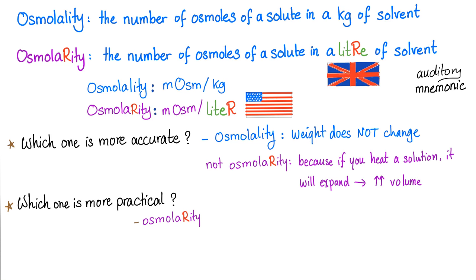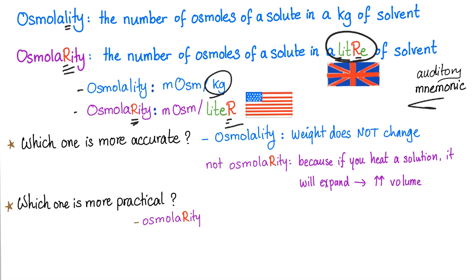The mnemonic goes like this: osmolarity in the liter. It's an auditory mnemonic — because some of you will try to say osmolality has an L and liter has an L, so don't do that. Listen: osmolarity by the liter. You'll never forget it. Osmolality per kilogram, osmolarity per liter. The beauty of this mnemonic is that it works in the UK where they write litre, and in the US where they write liter. This mnemonic works across cultures.